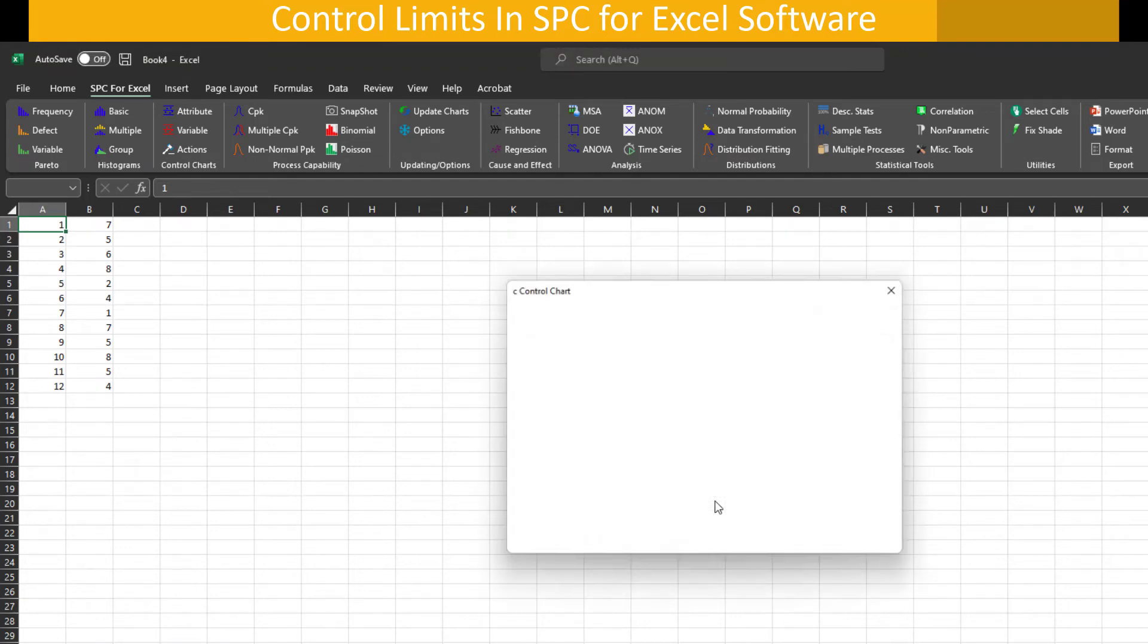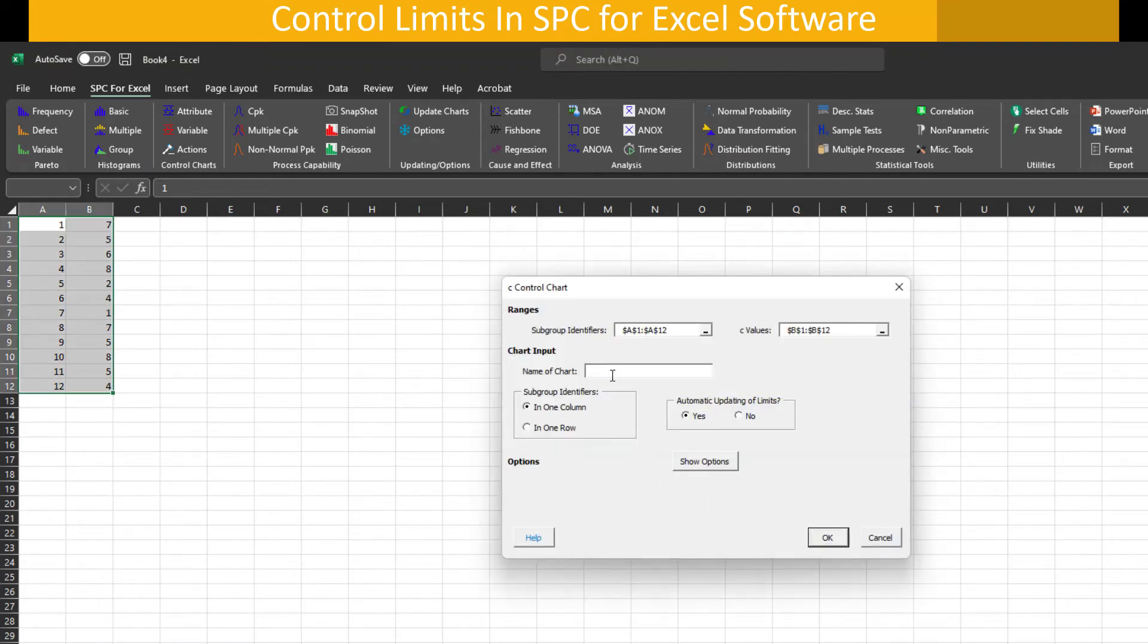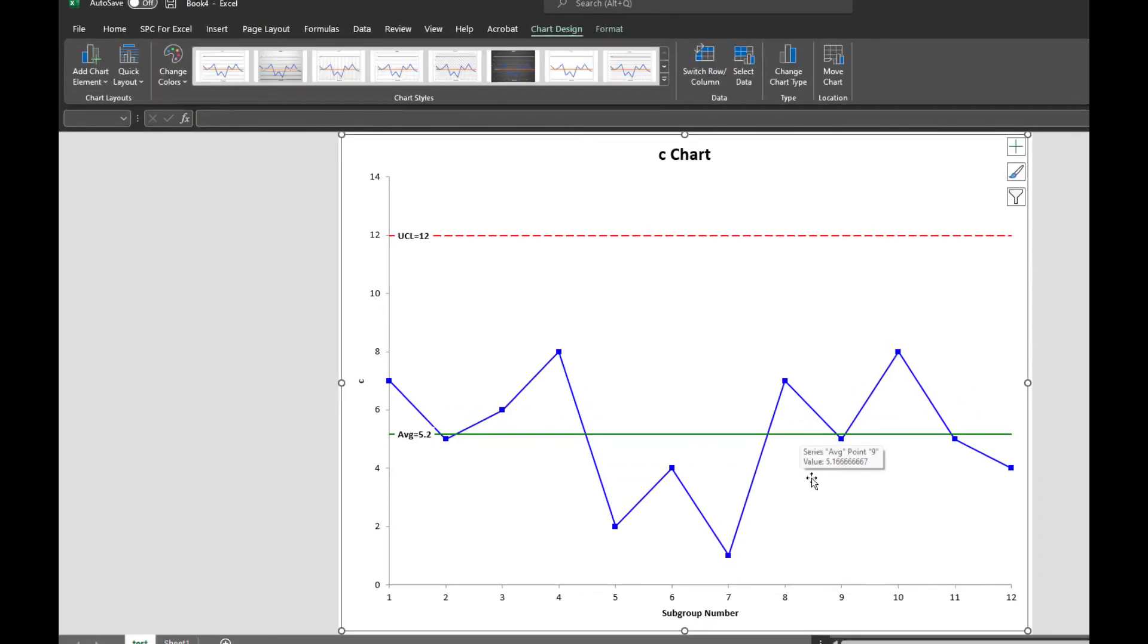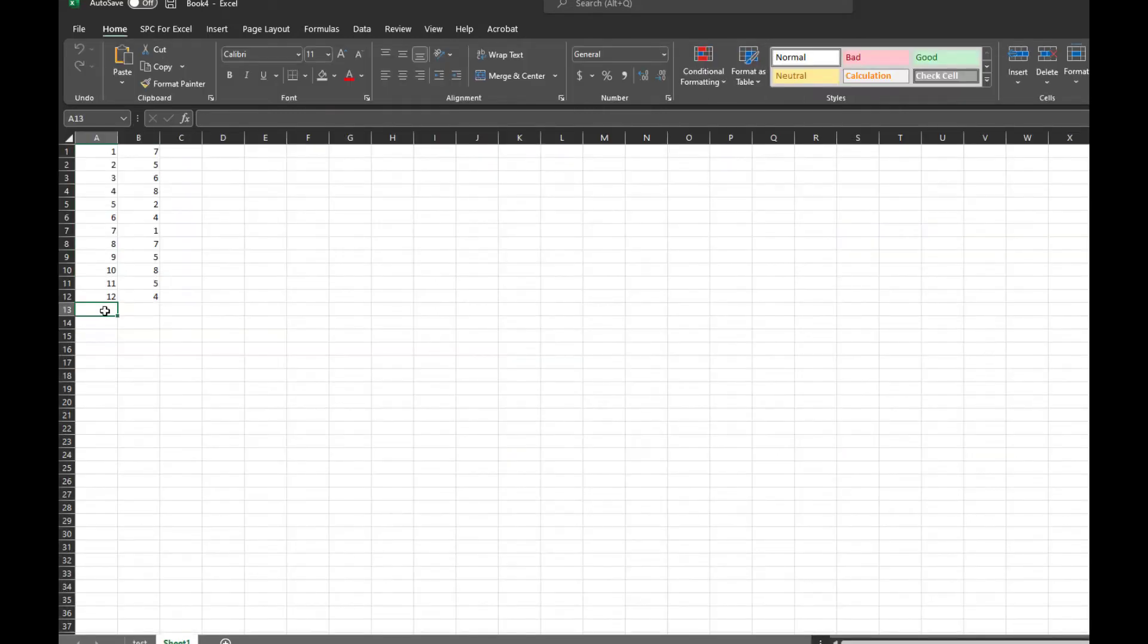You come in and select the C chart you're going to use. Select OK. Then all you have to do is enter a name for the chart. We'll just call it test. Keep the automatic limits right now updating and say OK. And you get your C control chart where you have your C values or the number of OSHA recordables on the Y axis. It has the upper control limit calculated, the average calculated for those 12 values.